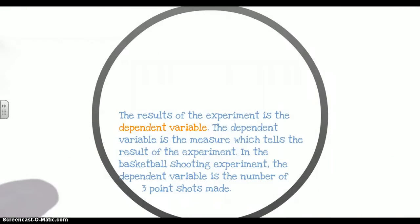The results of the experiment are called the dependent variable. The dependent variable is the measure which tells the results of the experiment. In the basketball shooting experiment, the dependent variable is the number of three-point shots made. The independent variable is what you change in an experiment. The dependent variable is the thing that changes by itself because you changed the independent variable.